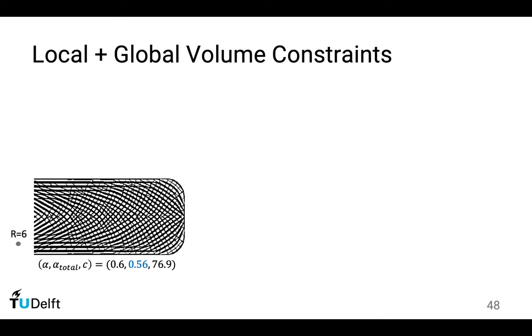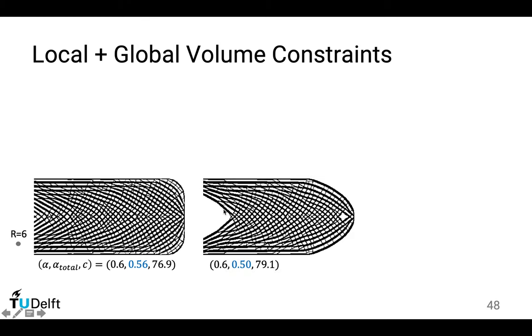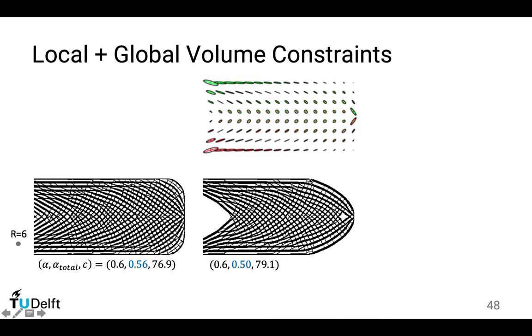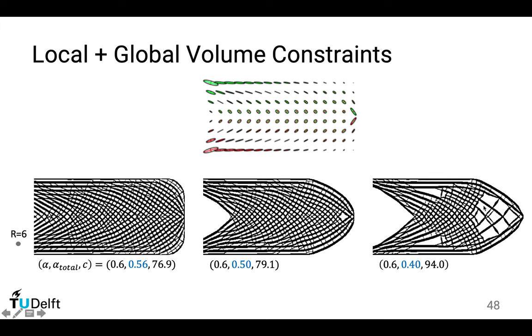We could also place this local volume constraint and global volume constraint at the same time. For instance, this one is without global volume constraint. So if we say we would like to reduce some material, and we find out these three parts become empty. And if we compare this with this stress distribution, we could find out it is the region where the stress is relatively small that is first reduced or removed. If we further reduce the amount of total volume constraint, some other region will disappear as well.